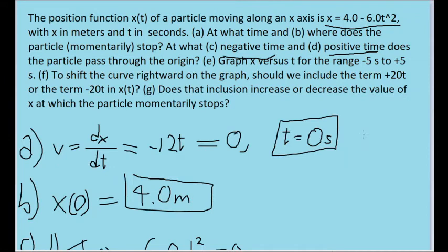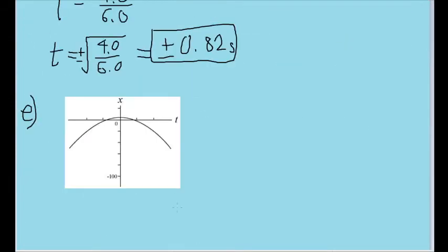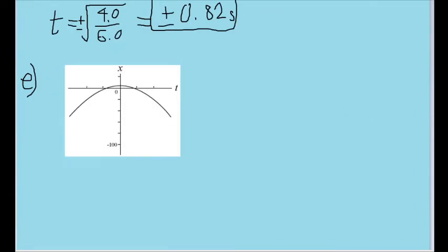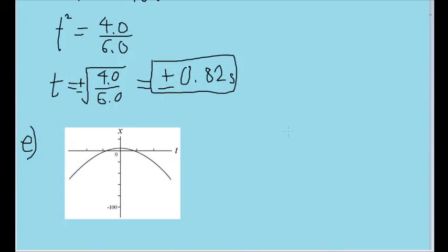For Part E, we're asked to sketch a graph of the position function. Now you could probably try to do this in your head, but for the sake of precision, I'm just going to show a graph that was generated by a graphing calculator. And here is a simple graph of the position function. This actually is an interval of negative 3 seconds to positive 3 seconds, as opposed to the negative 5 seconds to positive 5 seconds range that the problem asks for, but it really shouldn't make that much of a difference, and hopefully you get the idea.